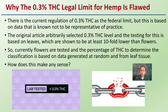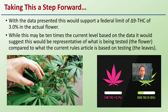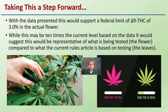How does this really make any sense? It's basically a flawed value. With the data presented, this would support the federal limit of 0.3% THC going up to a 3% THC level from the actual flower — roughly ten times the current level based on the data — which would suggest this would be representative of what's actually being tested: the flower, compared to the current rules based on testing the leaves.